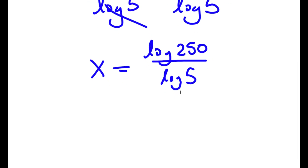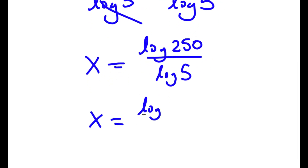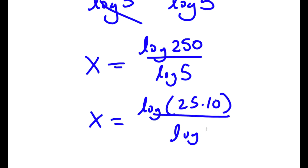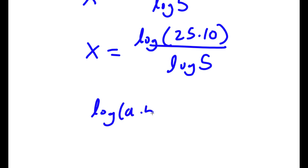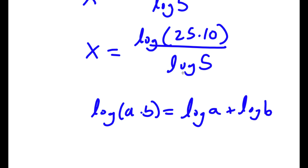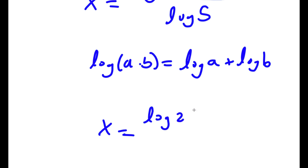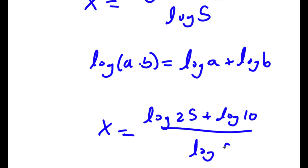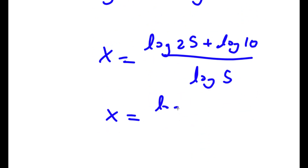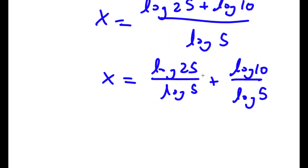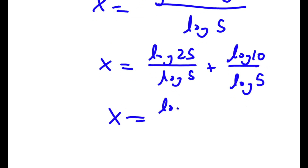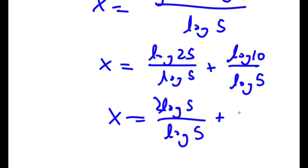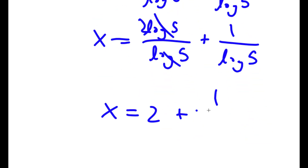Now log of 250, I can rewrite that as log of 25 times 10. And if I have something in the form log(a times b), this equals log a plus log b. So log(25 times 10) equals log 25 plus log 10, all over log 5. This gives log 25 over log 5 plus log 10 over log 5. And log 25 is log of 5 squared, which is 2 log 5 over log 5. These two cancel out, and I get x is equal to 2 plus 1 over log 5.